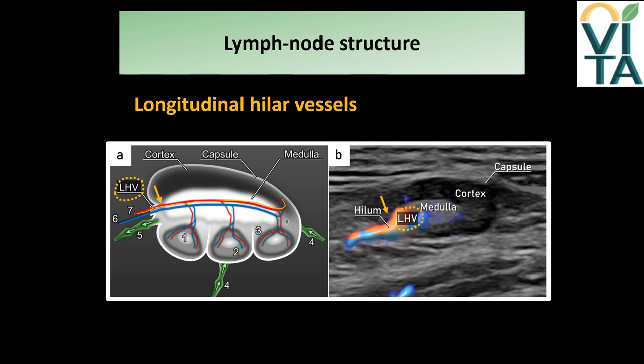These vessels are visible on ultrasound with color and power Doppler assessment. In some lymph nodes, additional arteries and veins may enter and leave outside the hilum, breaking through the cortex.